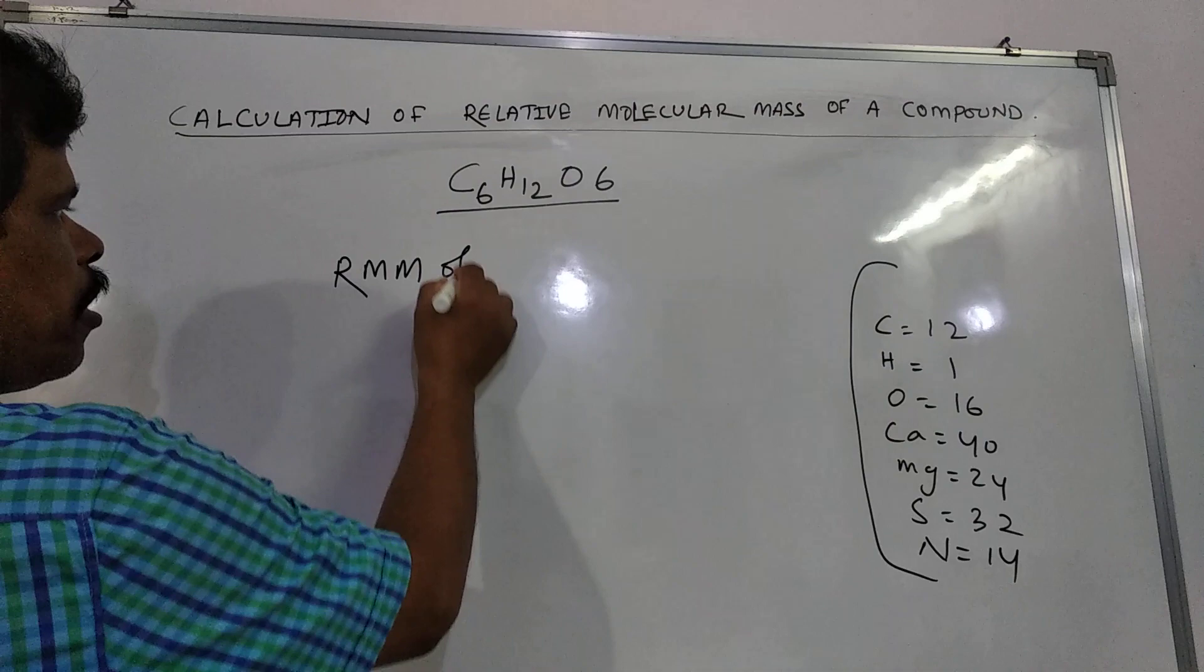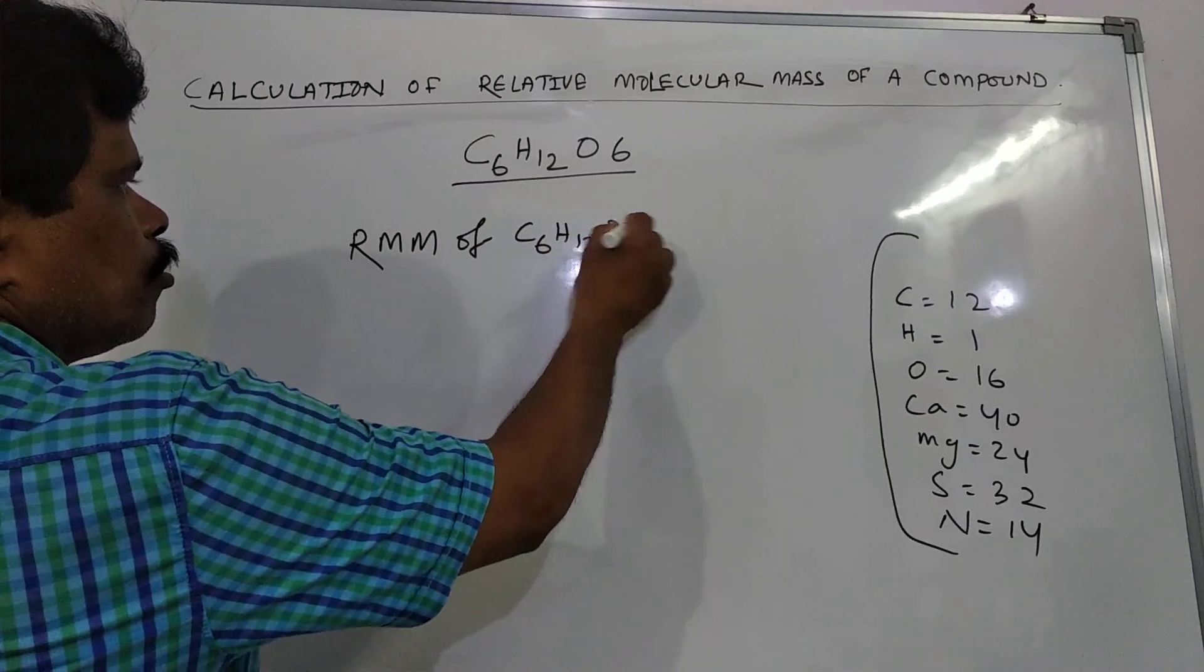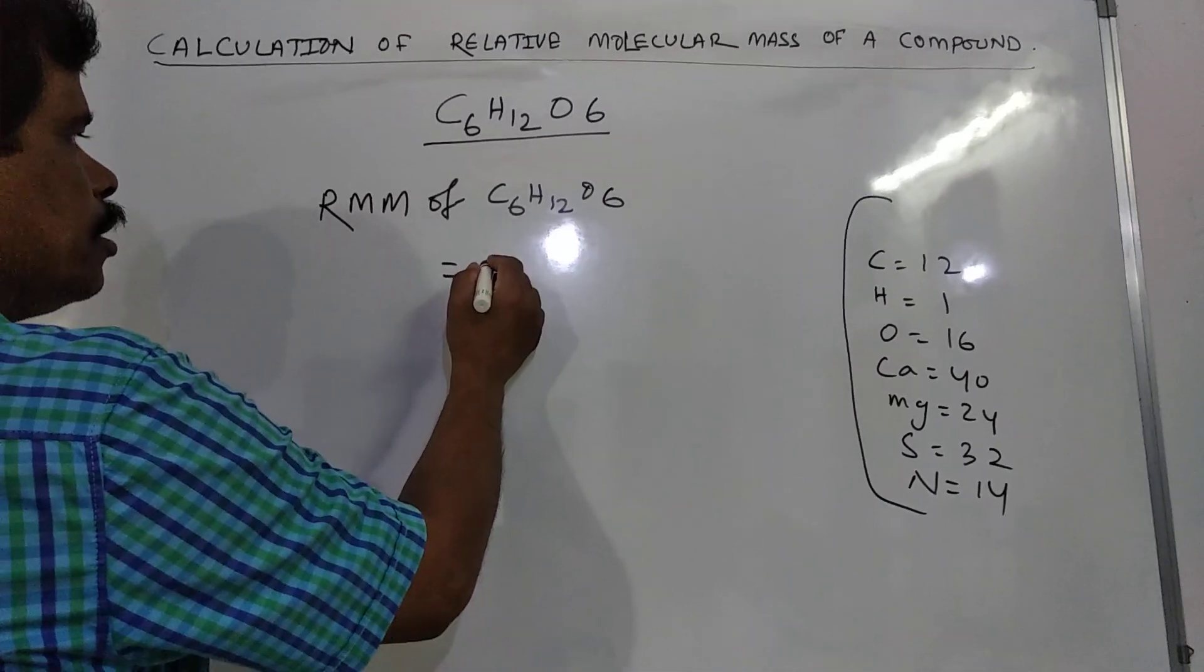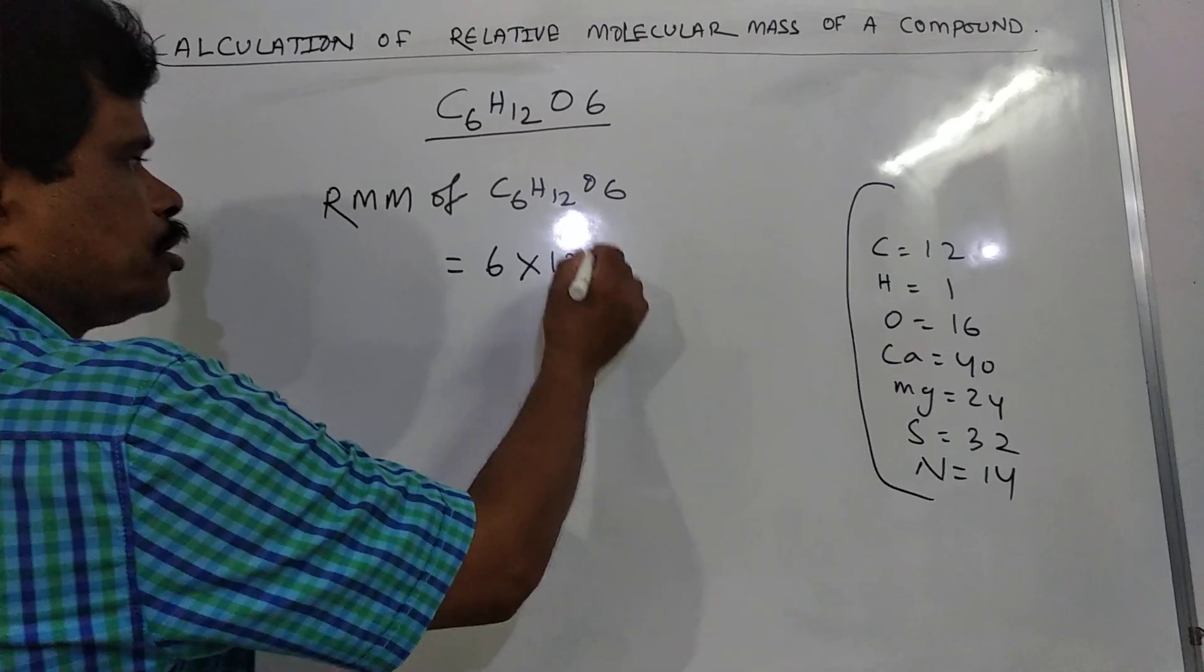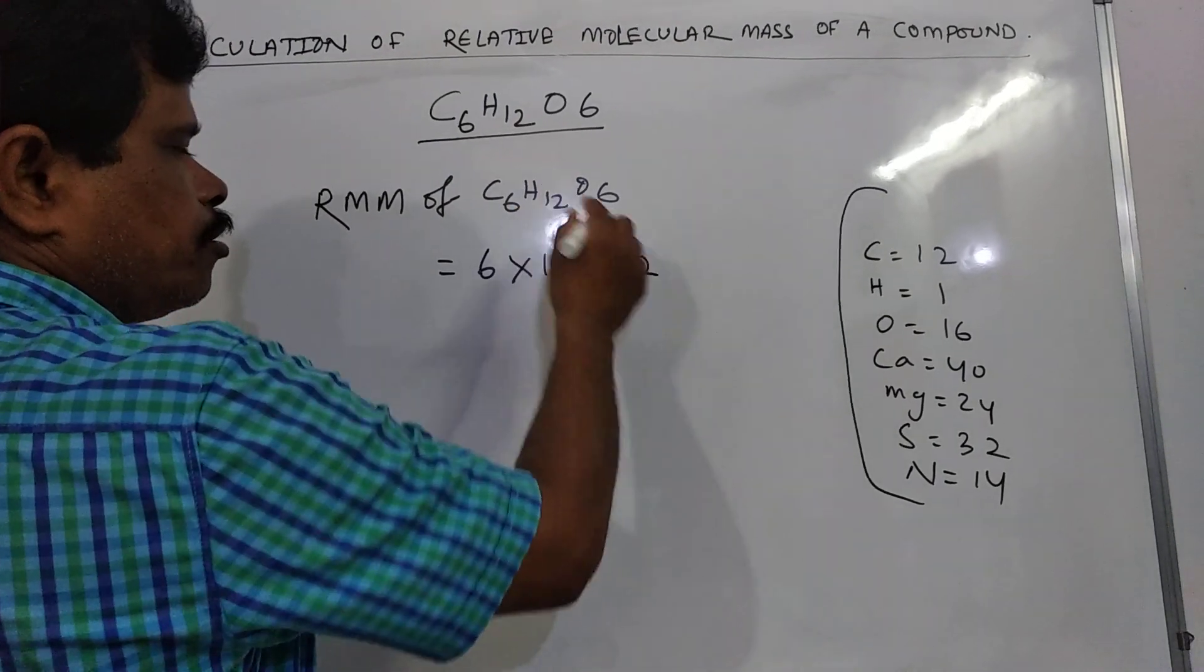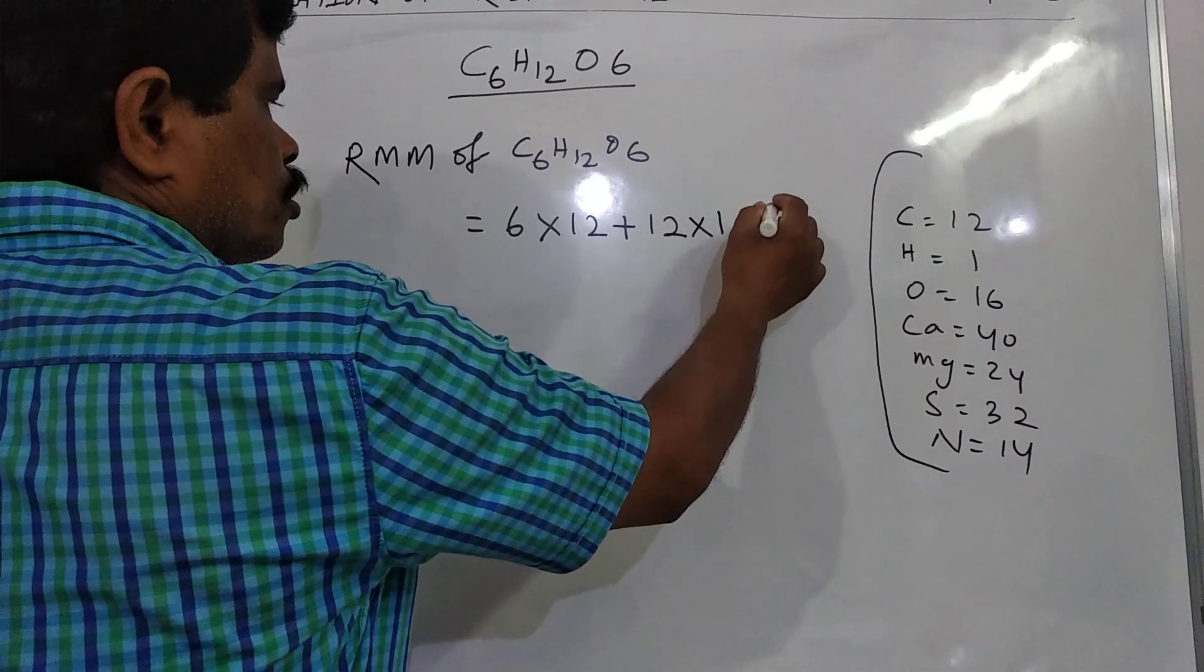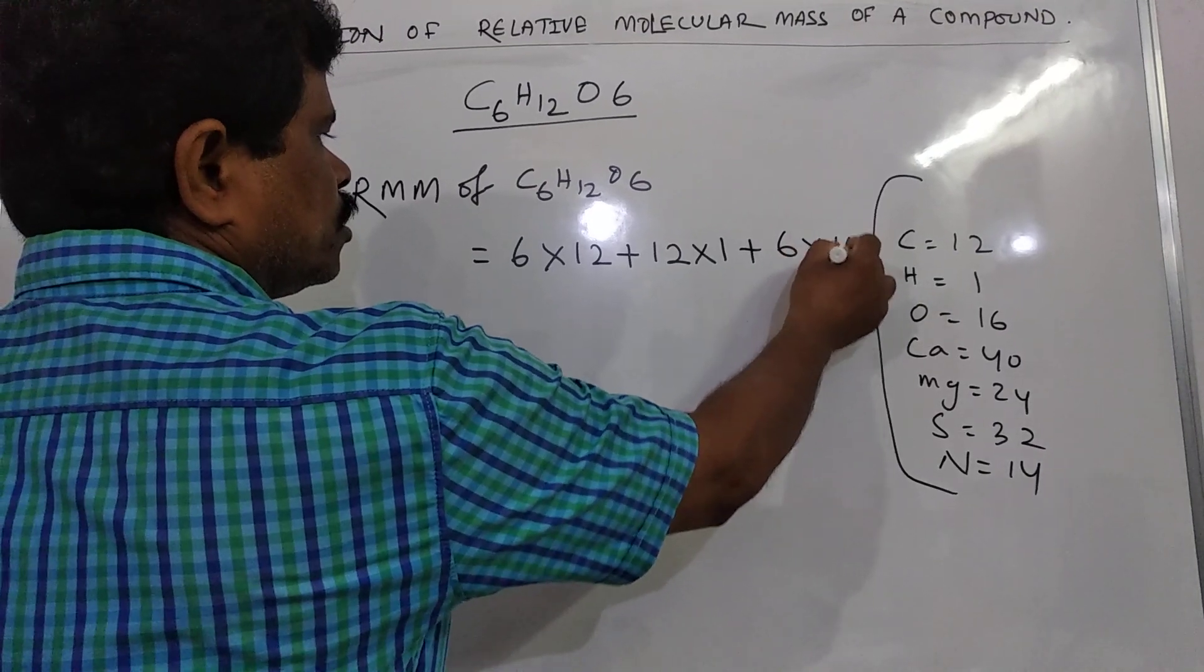Then how to calculate the relative molecular mass? So RMM of glucose C6H12O6 is equal to here 6 atoms of carbon into atomic mass is 12, plus 12 atoms of hydrogen atomic mass is 1, plus 6 atoms of oxygen atomic mass is 16.